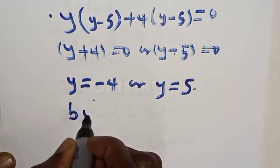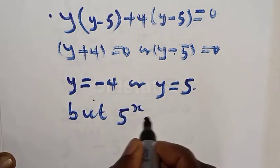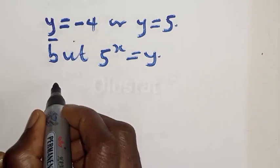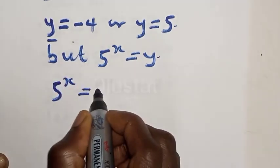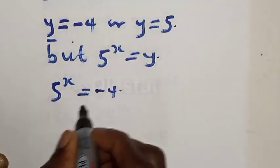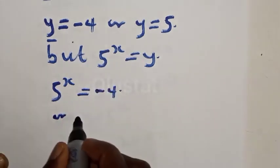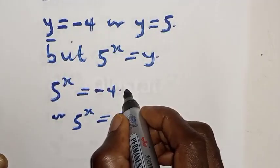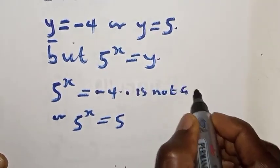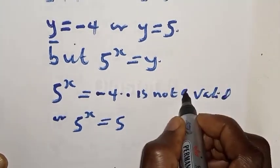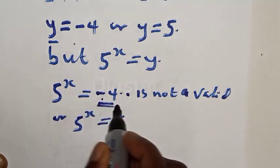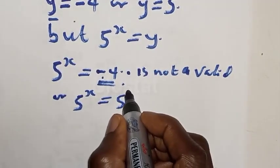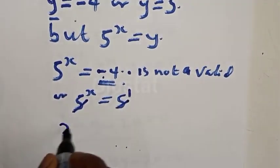Now, 5 raised to power x is equal to 5, and 5 raised to power x is equal to minus 4. But 5 raised to power x equal to minus 4 is not valid because it is negative — we are looking for the real value of x. So 5 raised to power x is equal to 5, which is the same as 5 raised to power 1. Therefore x is equal to 1. Answer.